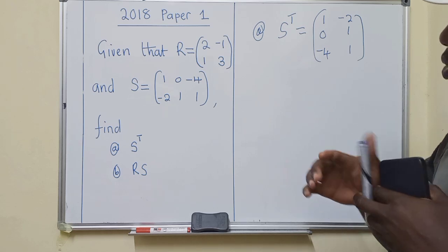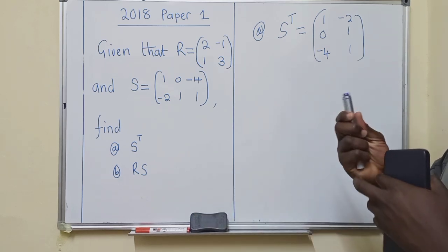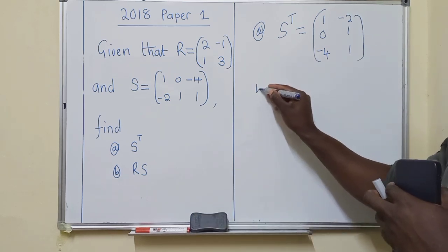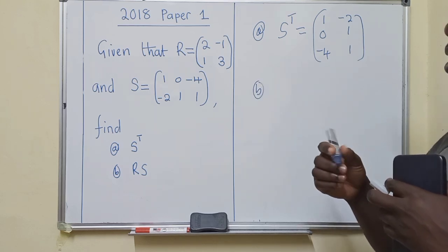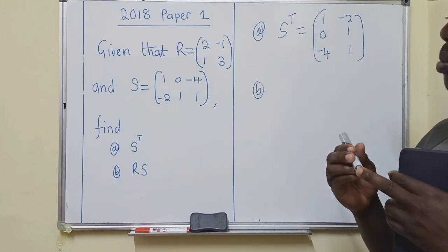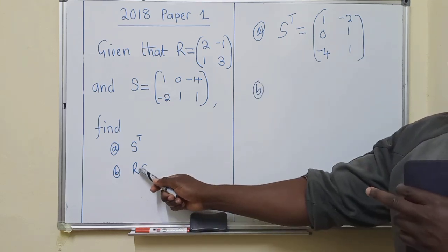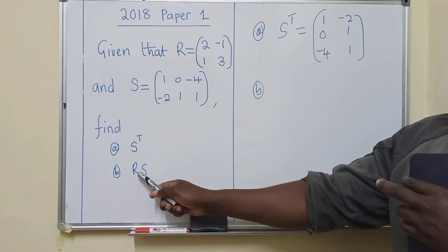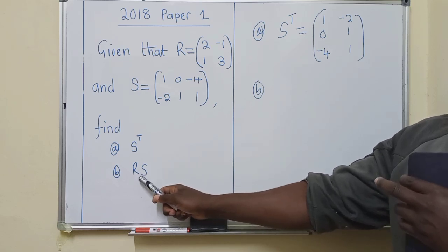All right, so for the next question, which is question B, it's a matter of multiplying. So I know you may be wondering how do you get to know that we are multiplying. If you can't see any sign between the letters, just know that it's multiplication.